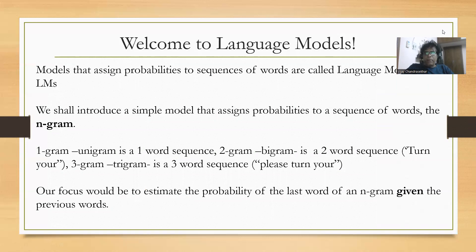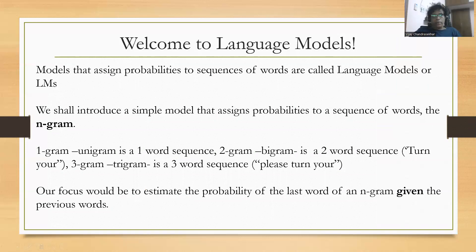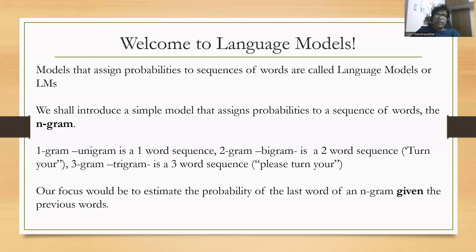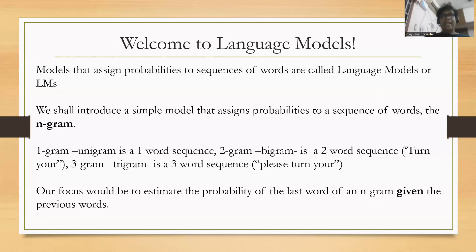Models that assign probabilities to sequences of words are called language models, or LMs. We are still restricting ourselves to the world of LMs — not LLMs. To get to LLMs, we need neural networks, and to get to neural networks, we preferably need to understand logistic regression, which we'll come to later. We shall introduce a simple model that assigns probabilities to a sequence of words — it's called n-gram.